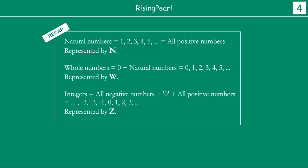So to quickly recap: natural numbers are 1, 2, 3, 4, etc. — all positive numbers, represented by N. Whole numbers are 0, 1, 2, 3, 4 — that is, we add the number zero to the natural numbers — represented by uppercase W. Integers are all negative numbers, zero, and all positive numbers — everything put together — represented by uppercase letter Z.